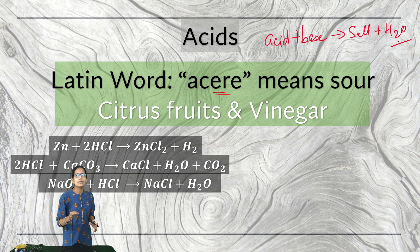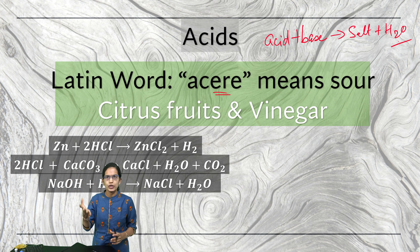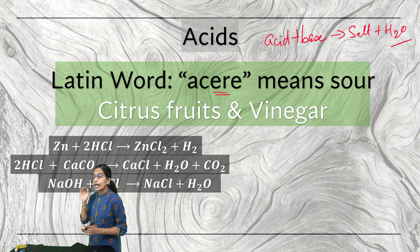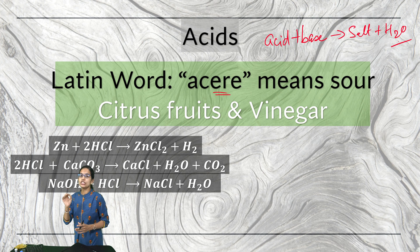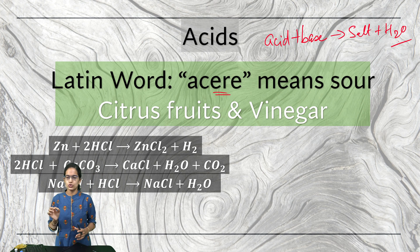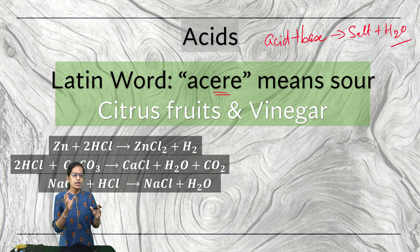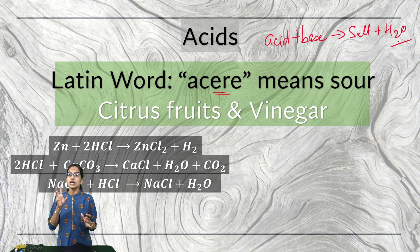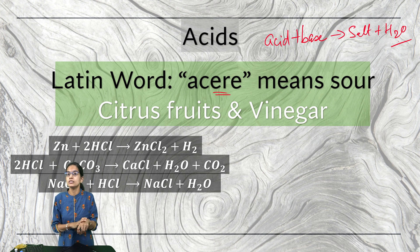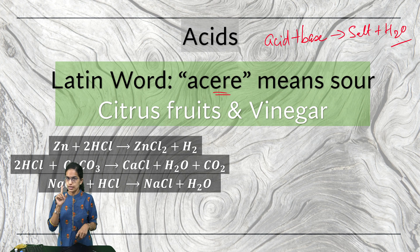Common examples of acids are citrus fruits, vinegars — anything which is sour would be a good example of an acid. Acids are corrosive, and there can be serious burns by acid if not properly handled.